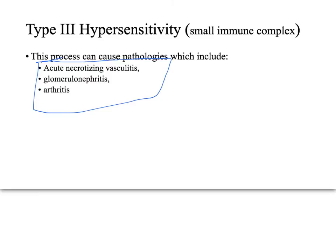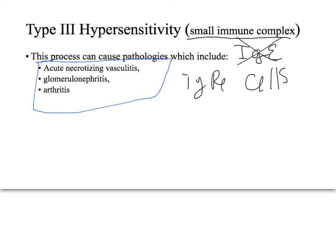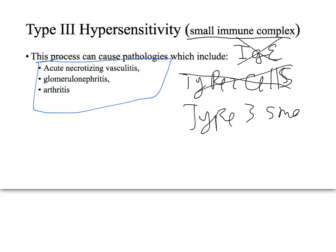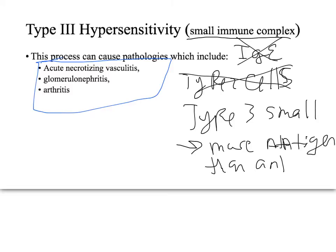Type 3 is different from type 1 because it uses IgG and IgM rather than IgE. It differs from type 2 because it involves small immune complexes, whereas type 2 involves cells — which are large, automatically creating a large immune complex. The other distinguishing feature of type 3 is that there is typically more antigen than antibody, so the antibody gets overwhelmed and cannot activate the complement cascade.